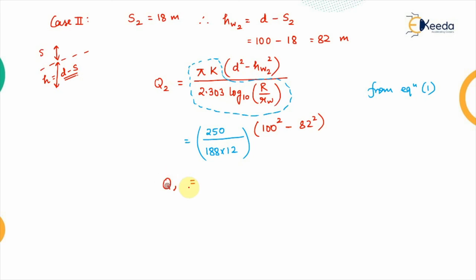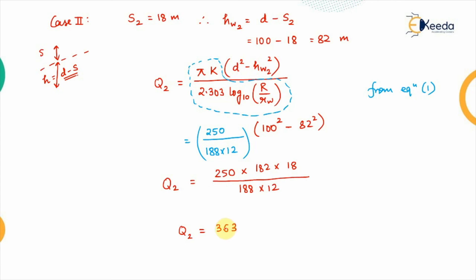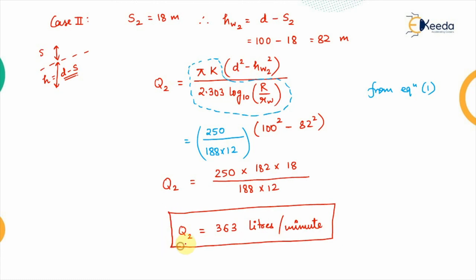Therefore Q2 equals 250 times (100 squared minus 82 squared) divided by (188 times 12). Opening the bracket using (a+b)(a−b): 100 plus 82 is 182, and 100 minus 82 is 18. So Q2 equals 250 times 182 times 18, divided by 188 times 12. Calculating this value, Q2 comes out to be 363 liters per minute. Since we haven't changed the units, the result is in liters per minute, consistent with the given discharge of 250 liters per minute.